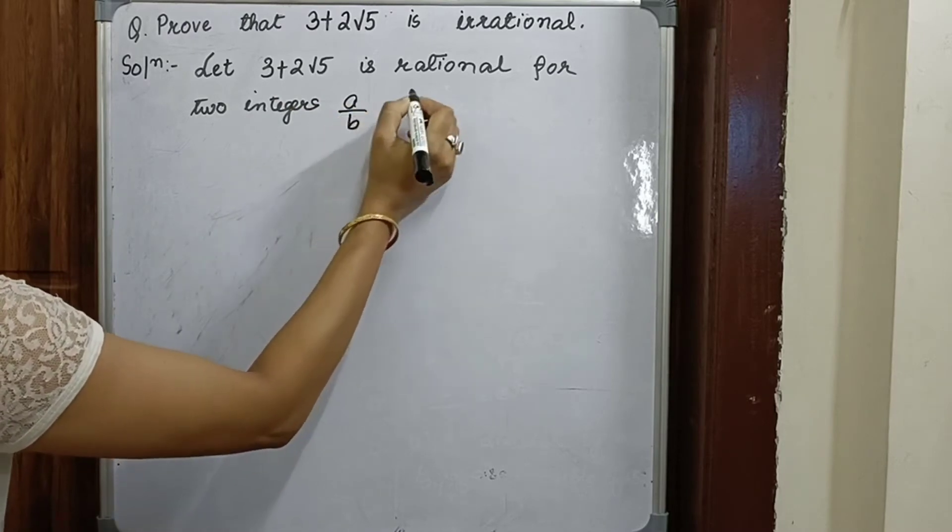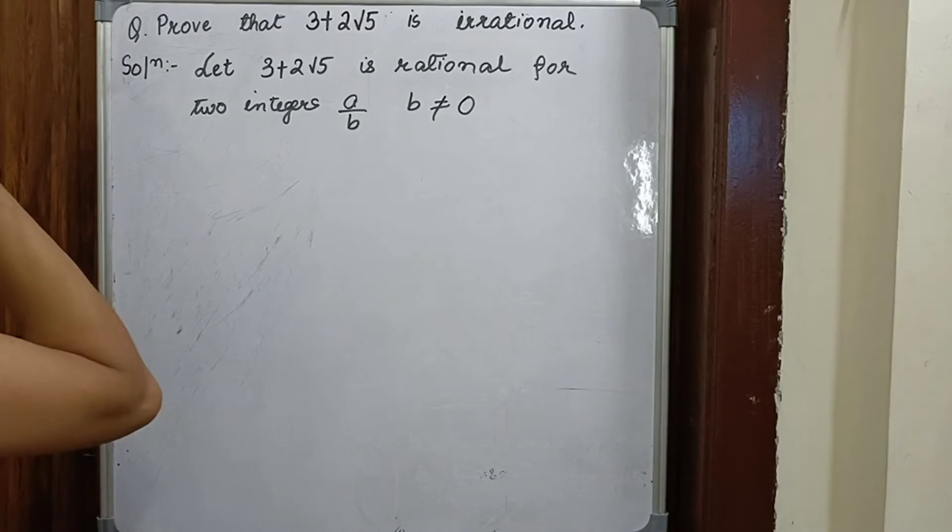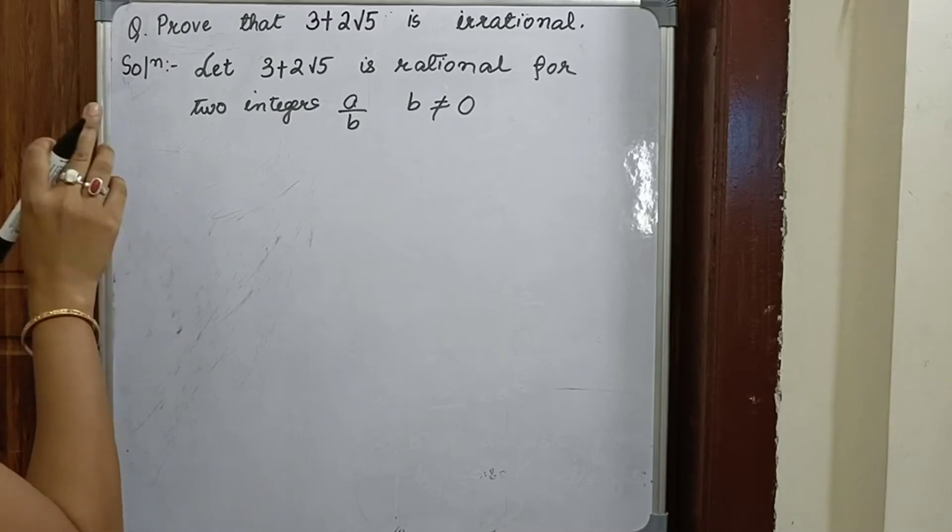Where b is not equal to 0. In my previous video I have solved question number one where I have proved that root 5 is irrational. So if you have not watched it, click on the i button above and watch it.